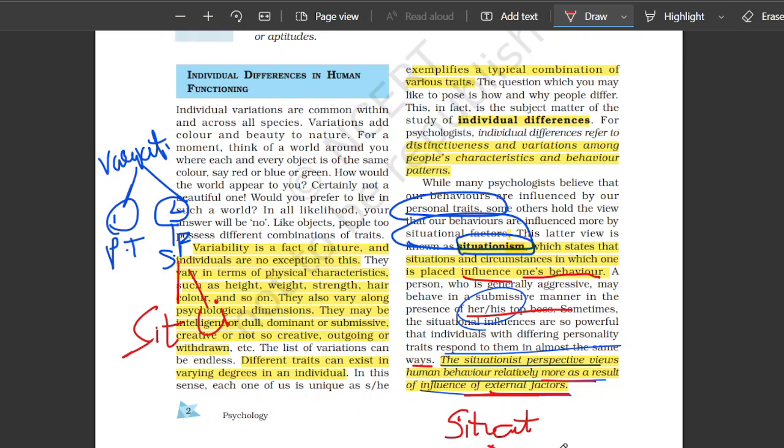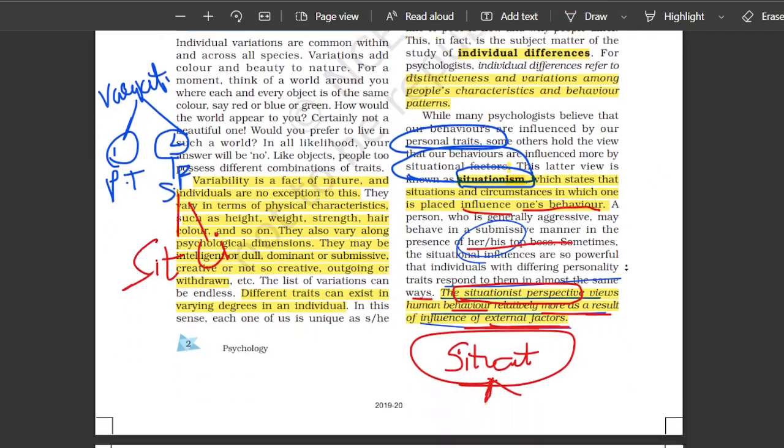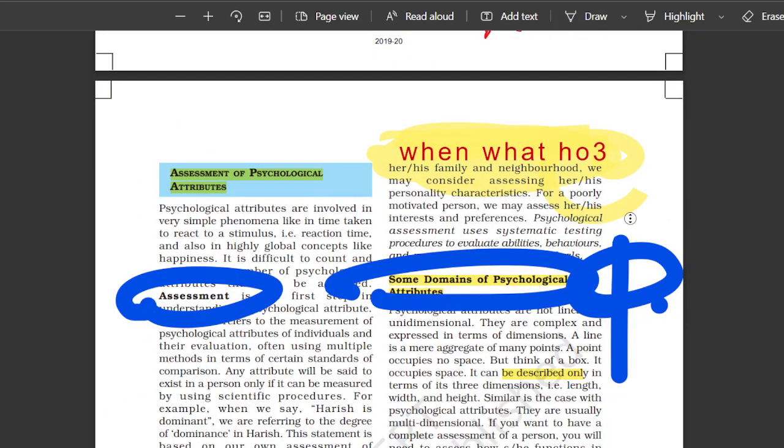First is internally you control yourself and the second is the external factors control you. So the theory of situationalist or situationalist perspective believes that the behavior is as a result of external factors. So this is a very important thing to understand because situationalism is going to determine how an individual behaves in the environment. Alright, so this was it.